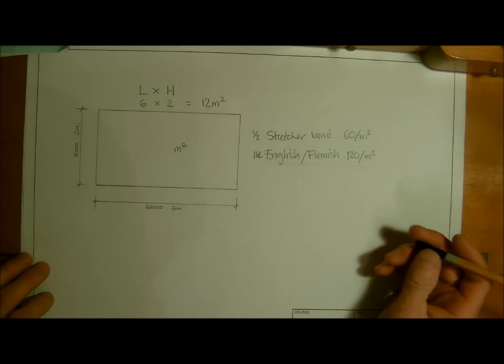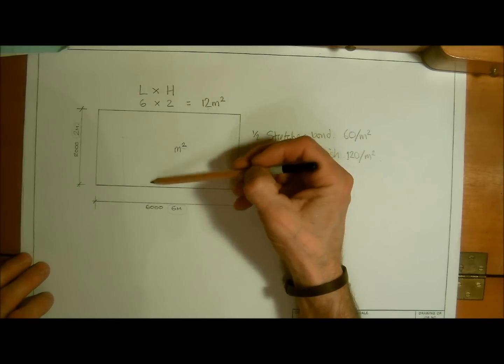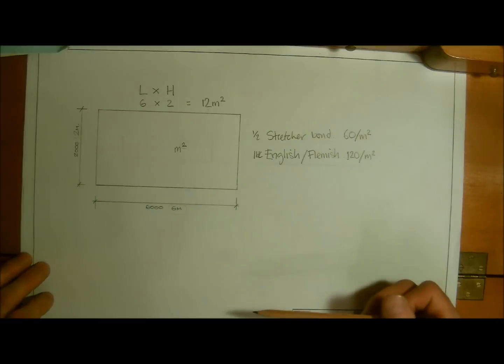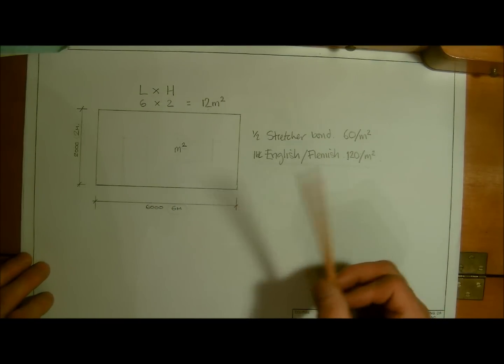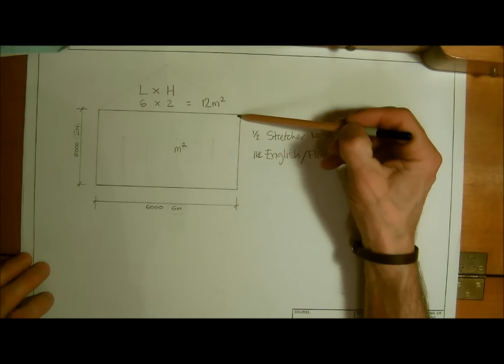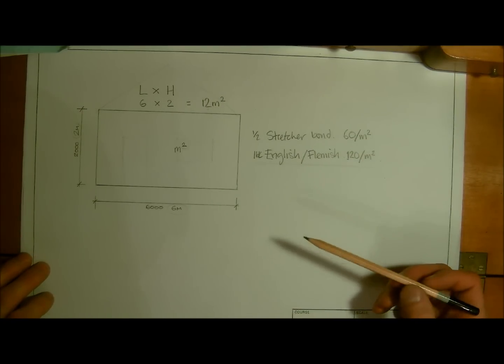But we're going to do what we call adjustments. And adjustments are going to be where we have doors and windows. So we're going to work out doors and windows. And we're also going to do gables. So we'll be working out how to work out bounding bricks and blocks for a gable.